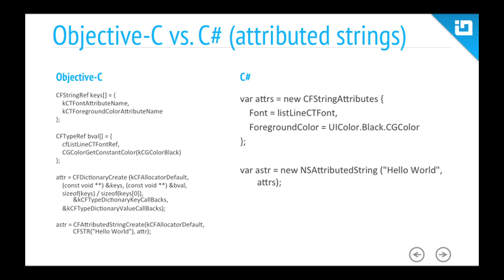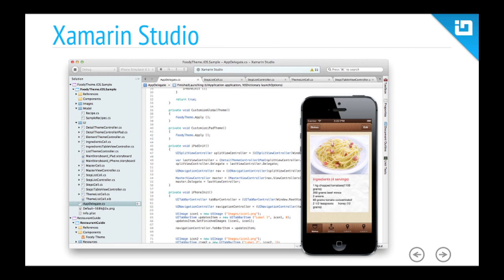Here's a comparison of Objective-C versus C# using attributed strings — a string with a font, bold sections, and foreground color. In Objective-C, the API is actually a C API with very long names, pointers to pointers, and dereferencing — a royal pain. If you look at the equivalent C# code, it's very clean, the names are easy to work with, and it's concise. That's just one example of the difference between the two languages.